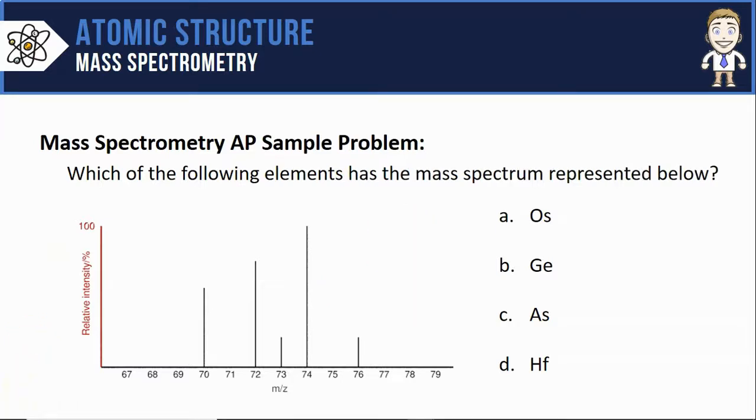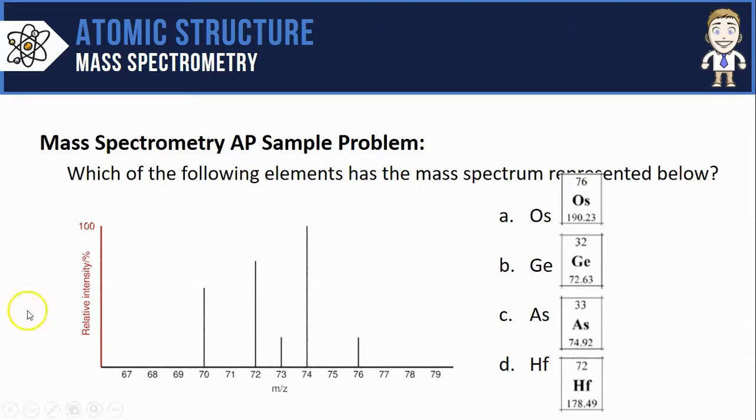So the first thing I need here is to look up these elements on the periodic table and see what their average atomic masses are. So I've got that done already, osmium, germanium, arsenic, and hafnium.